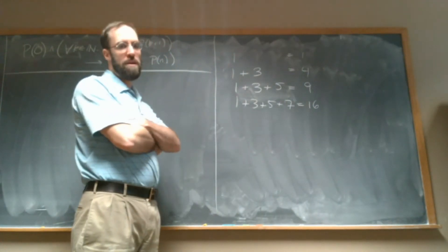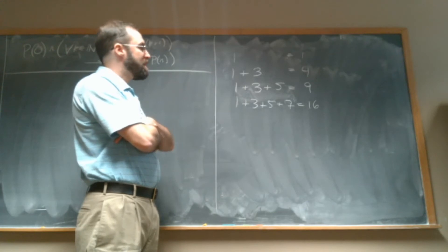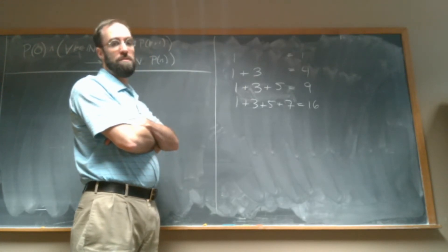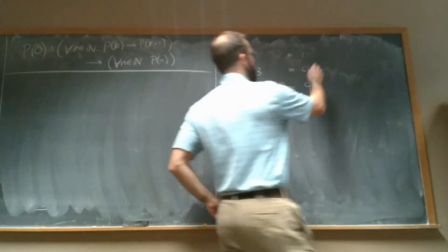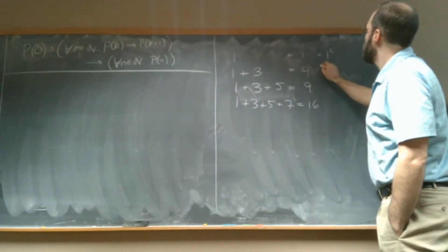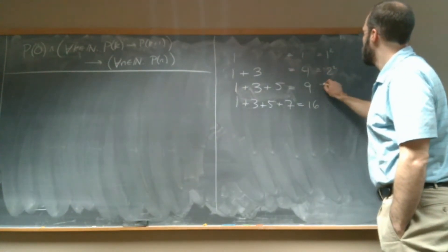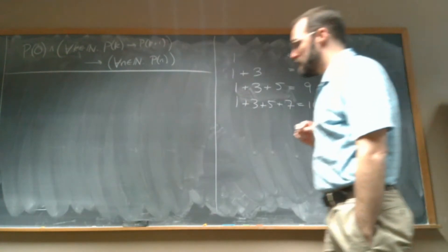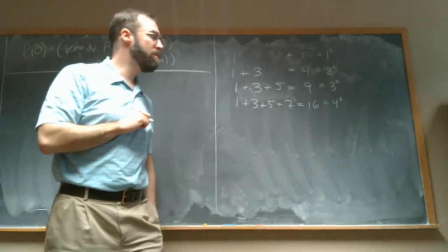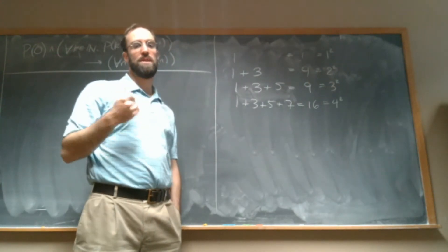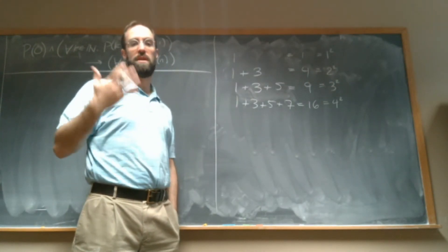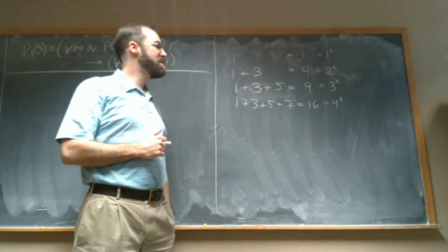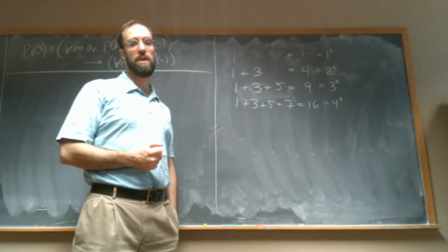And at this point, do you notice a pattern? I do. I notice that these numbers are all squares. So this is 1 squared, this is 2 squared, this is 3 squared, this is 4 squared. So noticing a pattern like that isn't a proof. It seems likely that the pattern may continue. We don't know for sure. But this is exactly the kind of thing that if we want to be sure, we can prove it by induction.